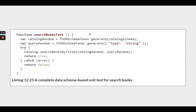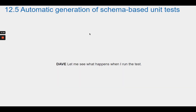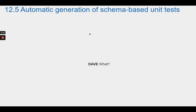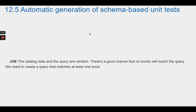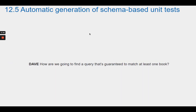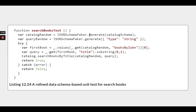Joe edits and shows the updated test code. Dave wants to run the test but Joe points out a problem: the catalog data and query are random, so there's a good chance no books will match the query. They need to create a query guaranteed to match at least one book. Joe's solution is to use the first letter of the first book in the generated catalog data as the query. Joe refines the test and Theo and Dave are delighted.